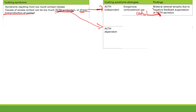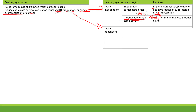Another cause of ACTH-independent Cushing syndrome is adrenal adenoma or carcinoma, where the adenoma or carcinoma makes too much cortisol. In this case, you would see atrophy in the uninvolved adrenal gland. The diseased gland is working very hard and is not atrophied, but your ACTH is low because cortisol is blocking ACTH. So the other adrenal gland isn't getting stimulated and atrophies, while the tumor keeps making cortisol.